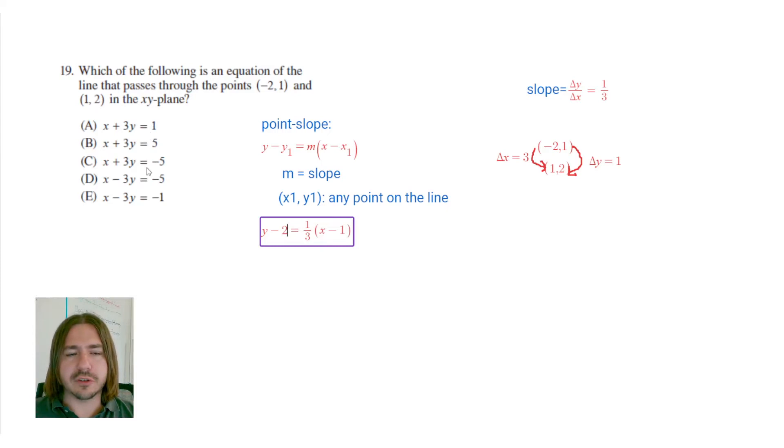So we have the equation here. But as you look through these answer choices, you'll notice none of these are in point-slope form. They're all in what we call standard form, meaning that they're in this ax plus by equals c format. So what we need to do is manipulate this equation to get it into this form. To start that process, we're going to distribute the 1/3.